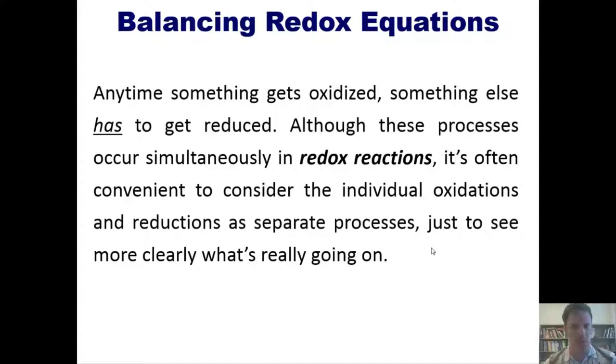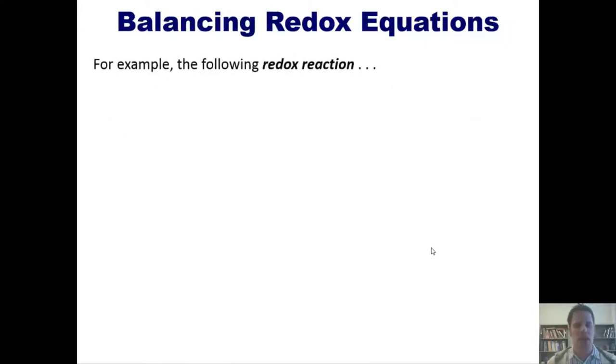Take for example this redox reaction. If we look at this closely, you'll notice that tin is going from having a 2+ charge to a 4+ charge. That is, it's becoming more positive, which means it's losing electrons, so tin is getting oxidized. Iron, in contrast, is going from 3+ to 2+, which means that it is gaining electrons. It's becoming more negative, which means that it is being reduced.